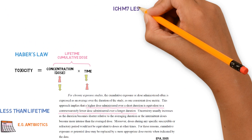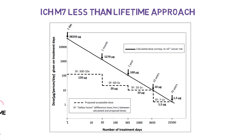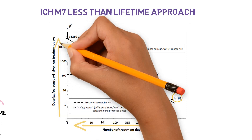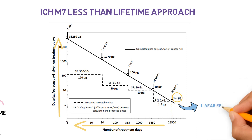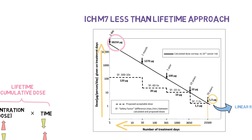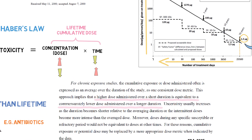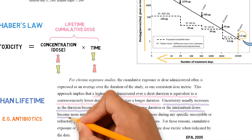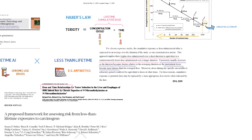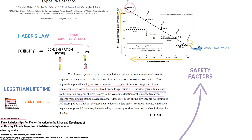A higher dose administered over a short duration is equivalent to a commensurately lower dose administered over a longer duration. Based on this, ICH M7 describes the less-than-lifetime approach, which can be summarized in a graph: if 1.5 micrograms per day is the acceptable intake over a lifetime, and if the exposure to the drug is shorter, the acceptable intake can be higher. The line describes a linear relationship between dose and time. However, if we keep this linear shape, higher doses over a short duration might overwhelm the repair capacity of DNA or saturate other detoxification pathways. Therefore, because uncertainty increases at higher doses, dose-rate correction factors have been described in the literature and are also applied by ICH M7. After applying these safety factors, the limits will be much lower, in a very conservative approach.